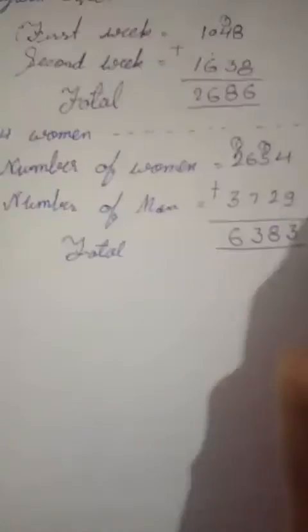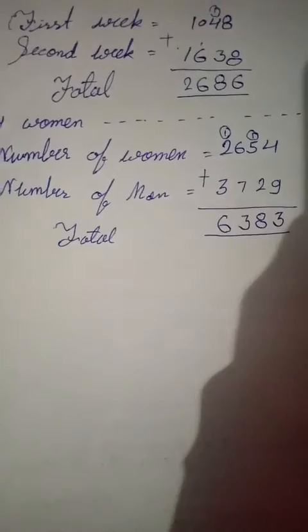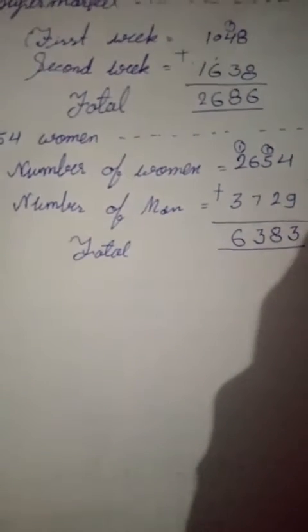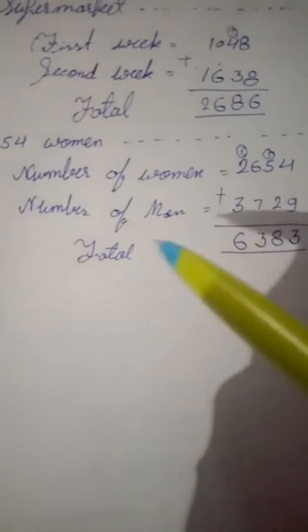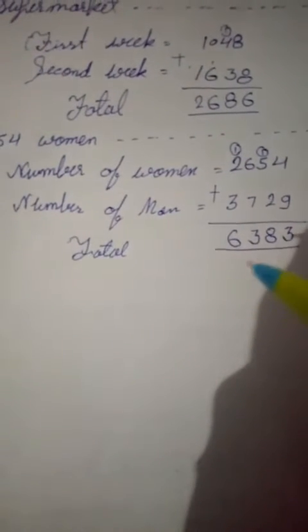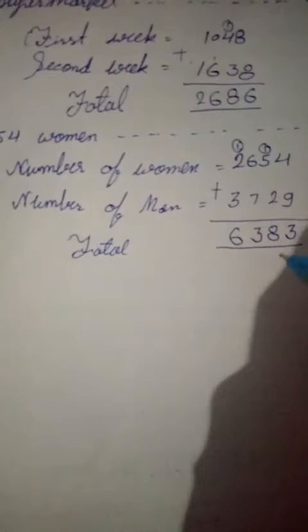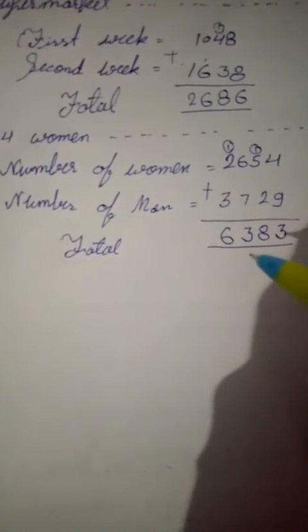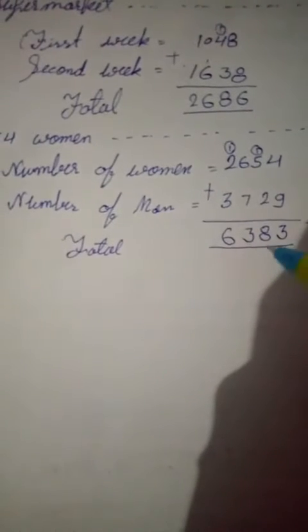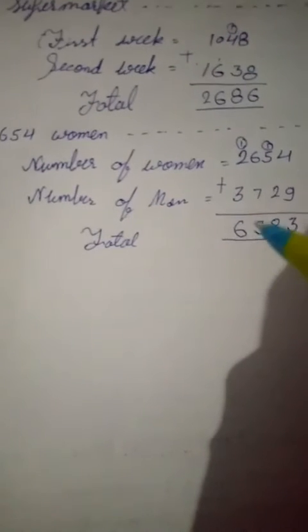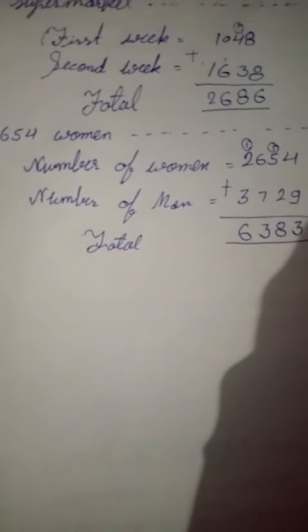The total answer is six thousand three hundred and eighty-three. To repeat: number of women is two thousand six hundred and fifty-four, number of men is three thousand seven hundred and twenty-nine, total number of people is six thousand three hundred and eighty-three. Complete Question 2.